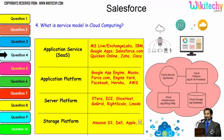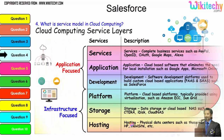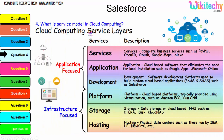Digging further into the service model — the typical examples are: application service, application platform, server platform, and storage platform given by Amazon S3. The important service layers are: services, application development, platform, storage, and hosting, with typical examples under each service. These are all important services which will be asked in interviews about cloud computing.